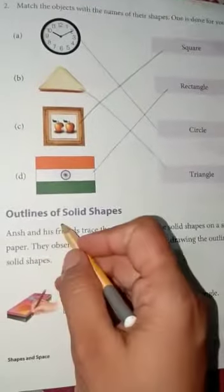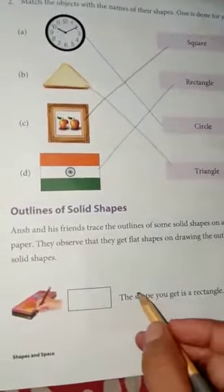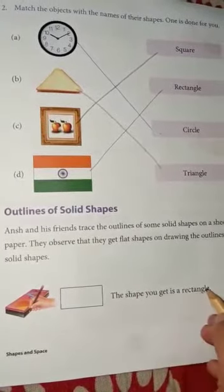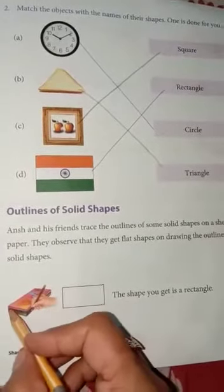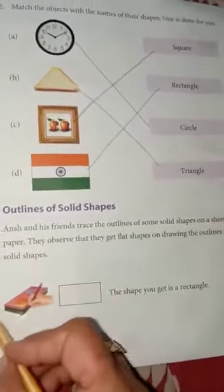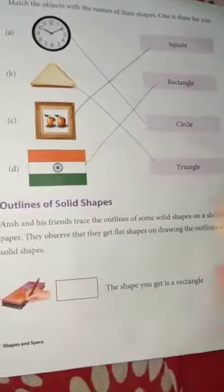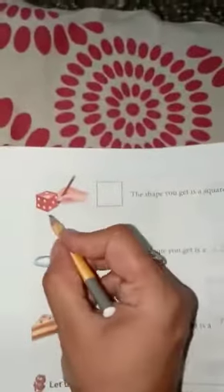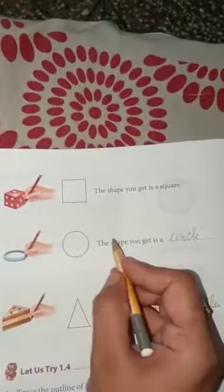Outline of solid shapes. Now, you can see this shape you get is a rectangle. What is this? Cuboid. When we put it in a paper, which shape will be a rectangle? Same. You can see this. When we put it in a cube, we get a square. When we put a sphere in a circle, the shape you get is a circle. When we put a cone on paper, we get a triangle. The shape you get is a triangle.